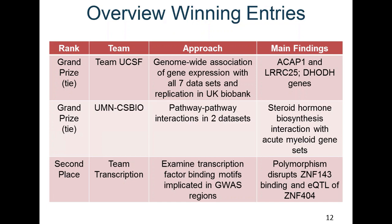The UMN CSBIO team performed pathway-pathway interaction analysis using a method they had developed in yeast — they had not previously worked with human GWAS data — and identified steroid hormone biosynthesis interaction with acute myeloid gene sets. The second-place Team Transcription, a computational biology group, examined transcription factor binding motifs implicated in GWAS regions, and found a polymorphism which disrupted transcription factor binding and affected expression of a gene in breast cancer.